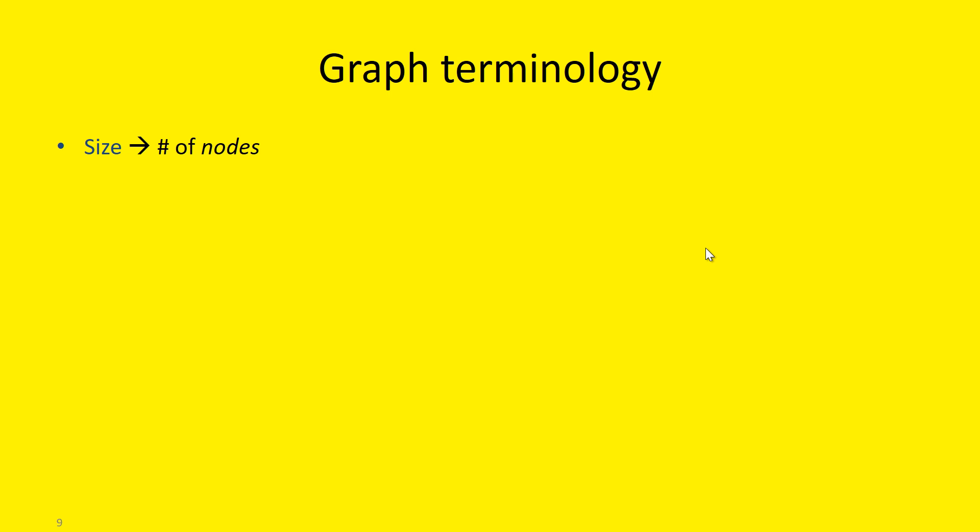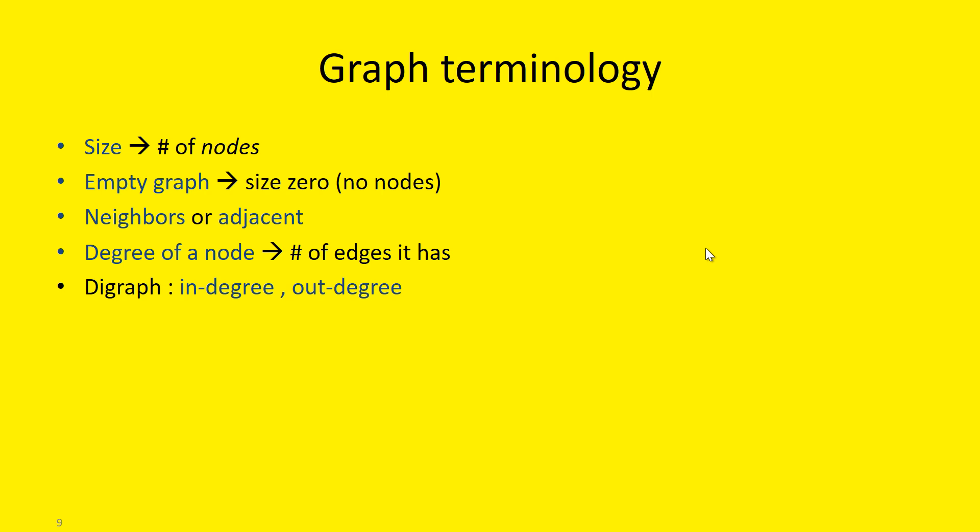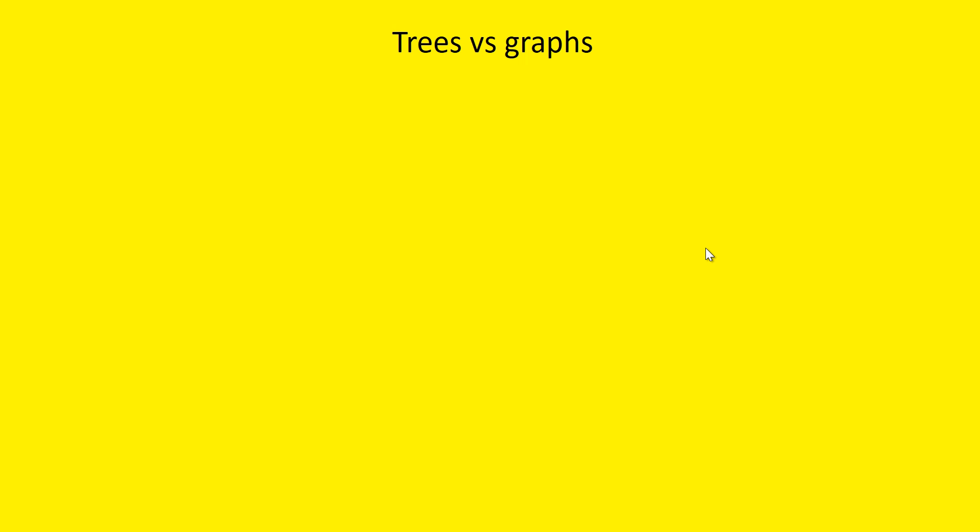Graph terminologies. First, the size. The size of the graph. If there is no node, it is empty graph. Zero size. It is special graph. Neighbors. You are neighbors if we are connected. Or adjacent. Degree of the node. If you have 500 friends list, that is degree. Digraphs have degree in and degree out. So that is in-degree and out-degree.